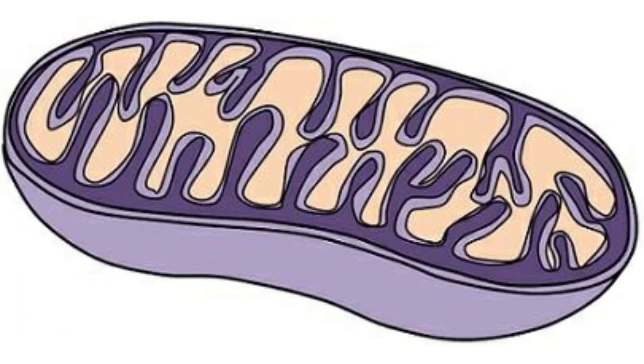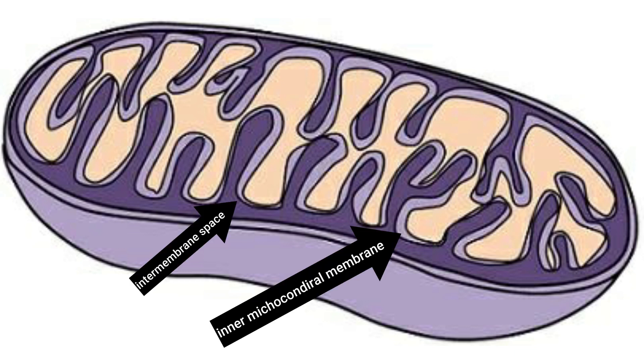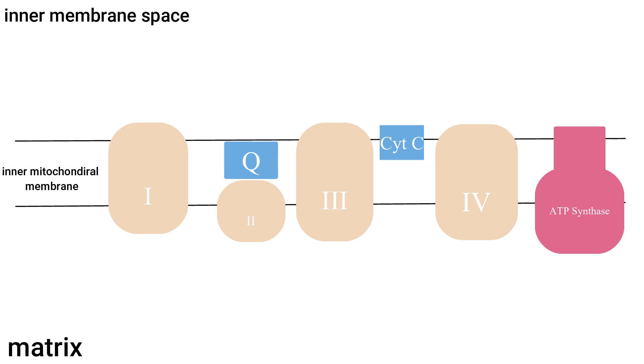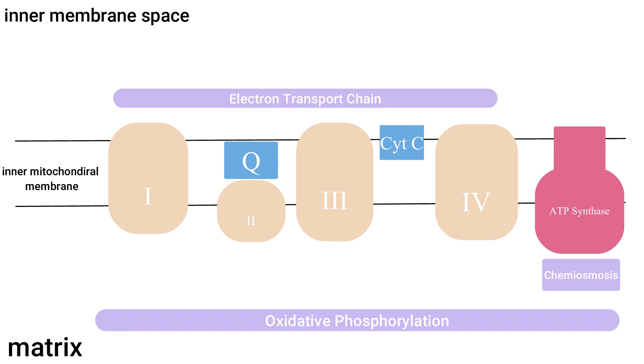This process is taking place on the inner mitochondrial membrane shown here. This part is the inner membrane space and this is the mitochondrial matrix. Before we get into how NADH and FADH2 are transformed into ATP, let's take a look at the complexes and other molecules that are involved in the process. Here we can see complexes 1 through 4 as well as ATP synthase. We also have two other molecules that are electron carriers embedded in the membrane. This is coenzyme Q and this molecule is cytochrome C. These four complexes are part of the electron transport chain and the ATP synthase plays a role in chemiosmosis. This whole process as a whole is called oxidative phosphorylation.